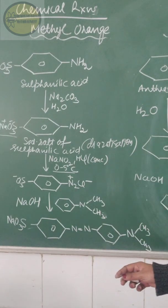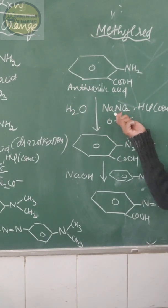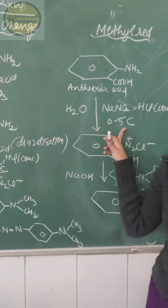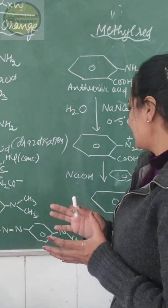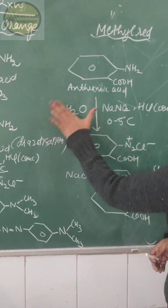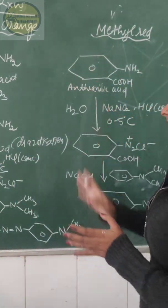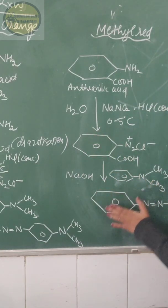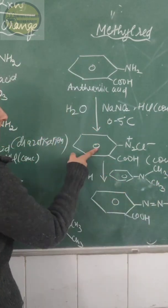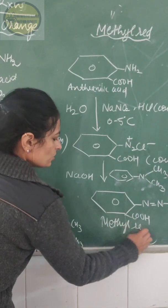For the reaction of methyl red, almost the same thing happens. We add sodium nitrite, HCl, and water to anthranilic acid while maintaining the temperature from 0 to 5°C on an ice-cold bath. This converts anthranilic acid to the diazonium salt — this step is the diazotization reaction. After that, we perform the coupling reaction: coupling of the aromatic amine with the diazonium salt, and we get methyl red.